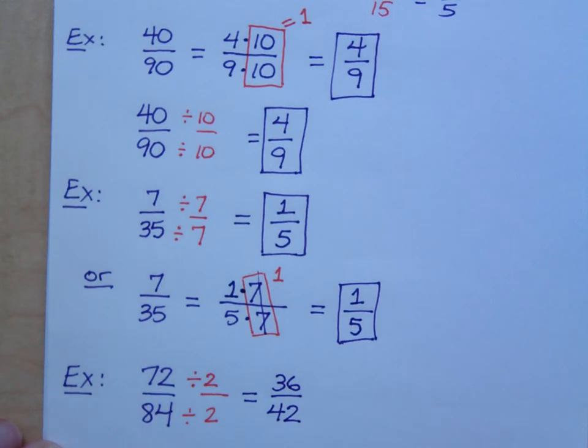Now I've got 36 over 42. These guys are both even again. So I know that at least two goes into these guys, but there might be something larger that I see now that maybe I didn't see before. What could go into both of these guys? Six goes into both of these.